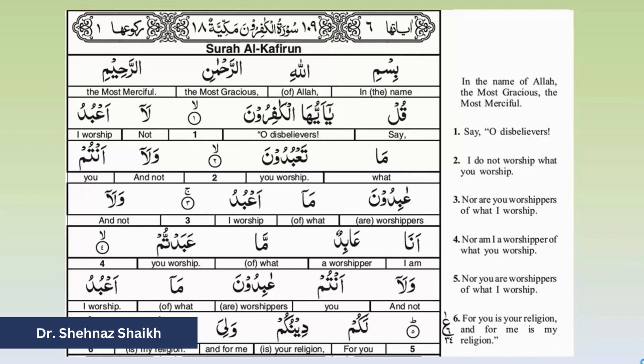'La' means 'not' and 'aabudu' means 'I worship'. When the reader remembers this, they recall reciting in Salah 'iyyaka na'budu' — where 'na'budu' means 'we worship'. 'Ma' means 'what' and 'ta'budu' means 'you worship'. All these words share the same root: Ayn, Ba, and Dal — which makes it easy for the student to learn the meaning.